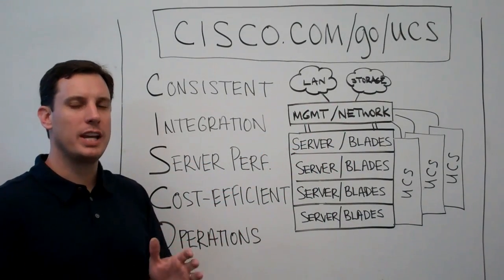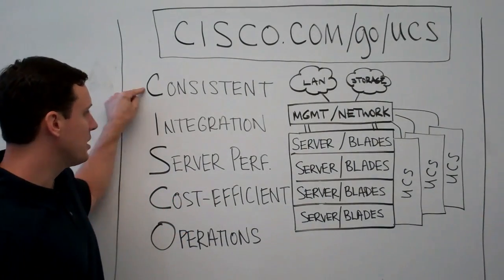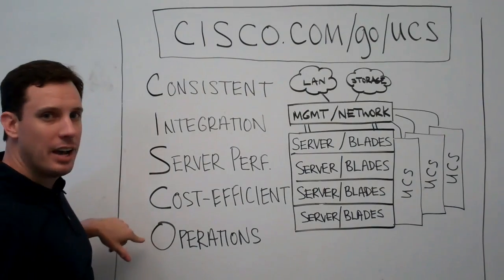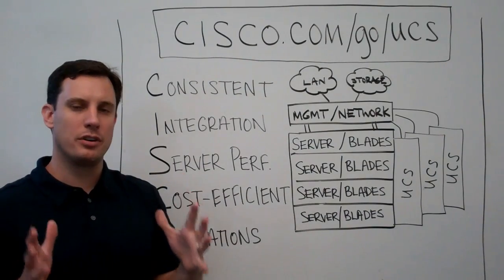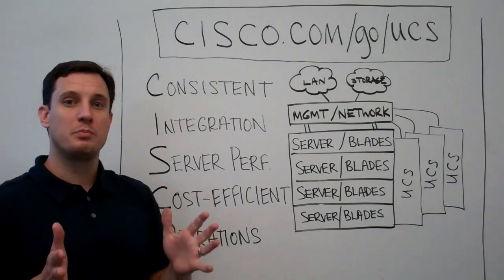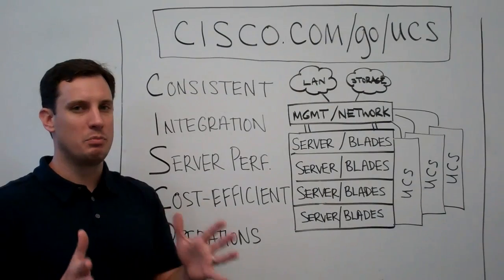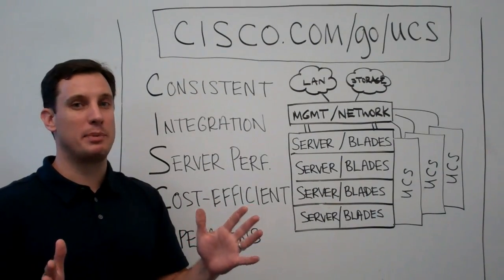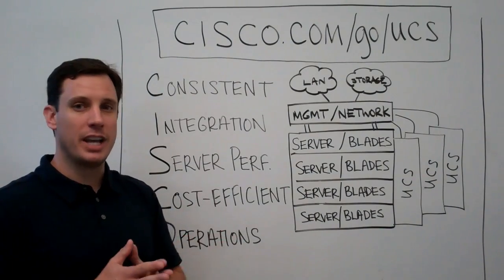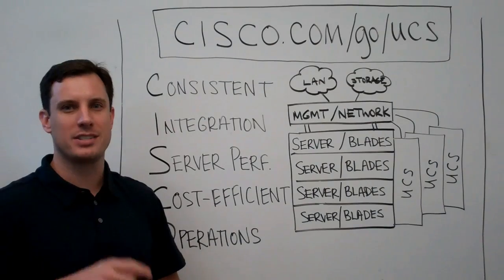It was built there from day one. So as you're looking at how to position the Cisco UCS system, remember CISCO: Consistent, Integrated, the best Server performance in the industry, Cost efficient, and an Operations model that will allow your IT organization to migrate as they feel comfortable. Hopefully this has been helpful in simplifying how to position Cisco UCS into your customer base. We believe the platform has been growing incredibly rapidly and is a great platform for your application needs. If you have any questions, cisco.com/go/UCS. Thanks, and great selling.